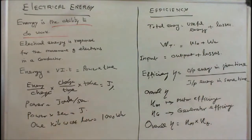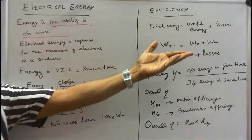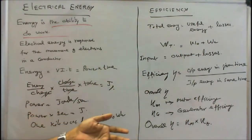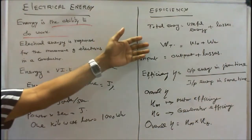The next term is efficiency. We know it very well - efficiency equals output by input. The total energy equals useful energy plus losses. The only device which gives maximum efficiency is transformer because it does not have any moving parts. That is why its efficiency is above 90%.